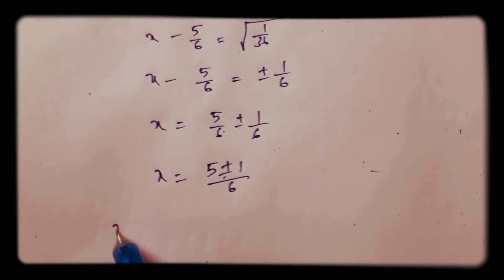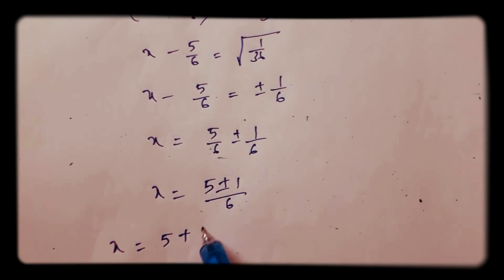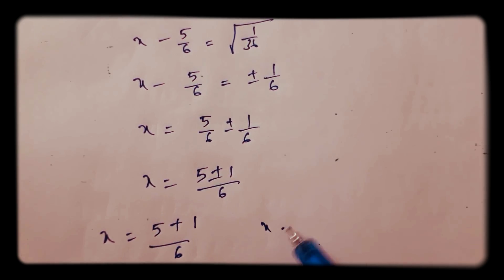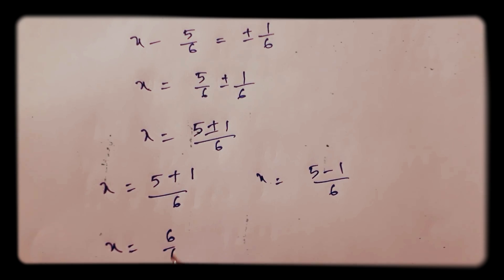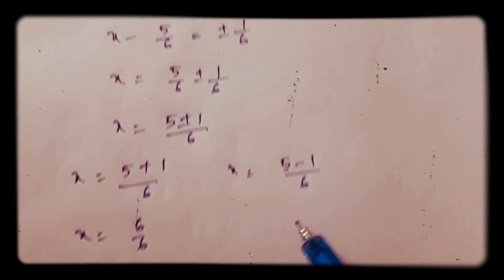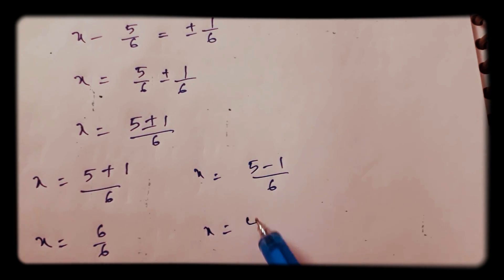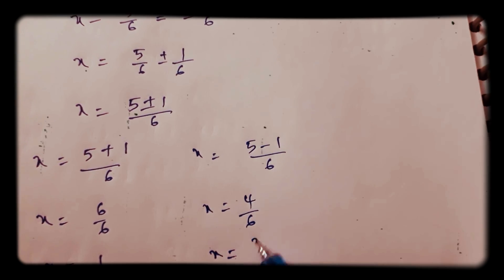If you take LCM, so one time you write 5 plus 1 by 6. The other is 5 minus 1 by 6. So it is 6 by 6 which is nothing but 1. And here it is 4 by 6 which is nothing but 2 by 3. In this way we need to solve completing square method.